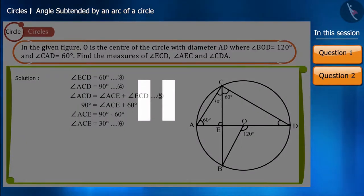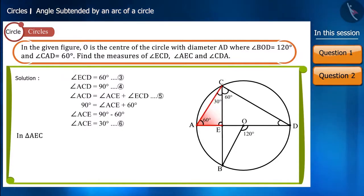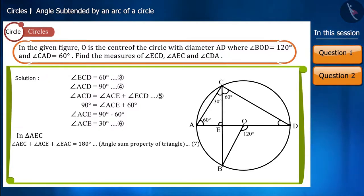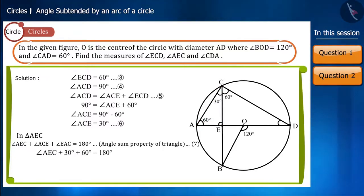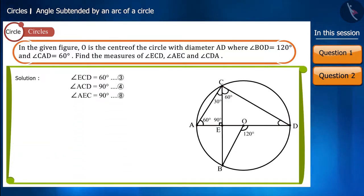You can pause the video and find the value of angle AEC by yourself. Looking at triangle AEC, we know that the sum of the three angles of a triangle is 180 degrees. We know the measurements of both angle ACE and angle CAD, so we get the value of angle AEC as 90 degrees.